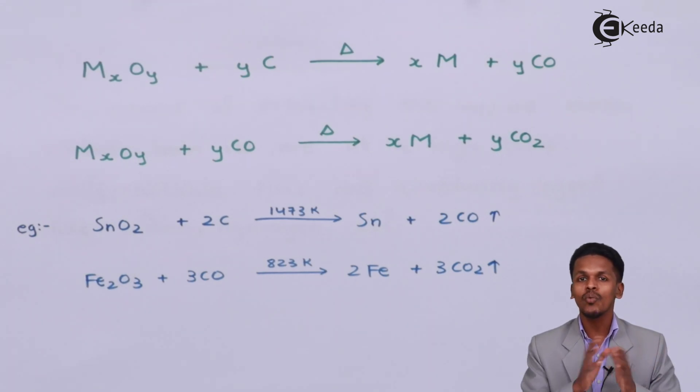In the previous lecture we discussed how to convert a sulfide ore or carbonate ore to metal oxide. This is the later part where we convert those metal oxides to crude metal. This is the most important thing we have discussed, and that's it for now.